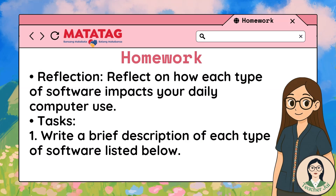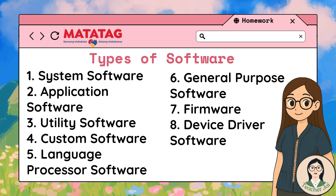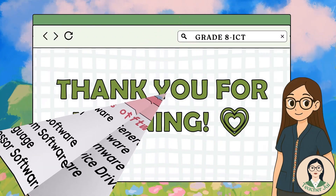Tasks: 1. Write a brief description of each type of software listed below. 2. Provide real-world examples of each software type. 3. Discuss how each software type has evolved over time and its future prospects. Types of software: 1. System software, 2. Application software, 3. Utility software, 4. Custom software, 5. Language processor software, 6. General purpose software, 7. Firmware, 8. Device driver software.